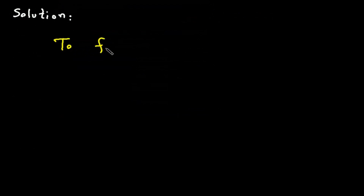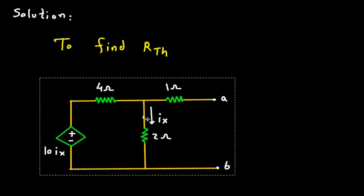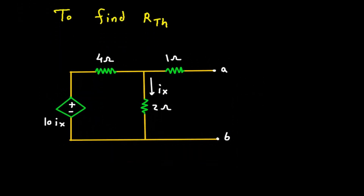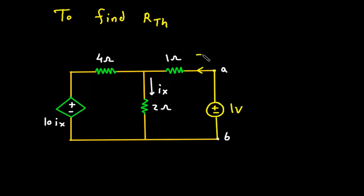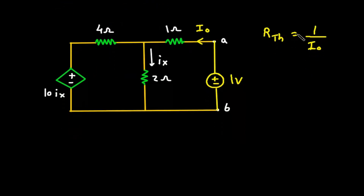To find RTH, we can see that there is no independent source. So we will consider a 1V voltage source — positive on one end, negative on the other. This is 1V. Now let's say this is current IO. RTH will be equal to 1 divided by IO. To find RTH we have to find the value of IO.